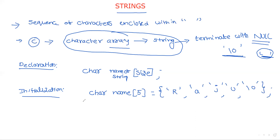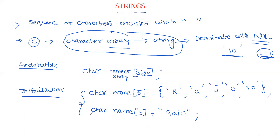That is one way of initialization. The second way of initialization is: char name[5] = and directly within double quotations we assign the string. These are the two ways of initialization.